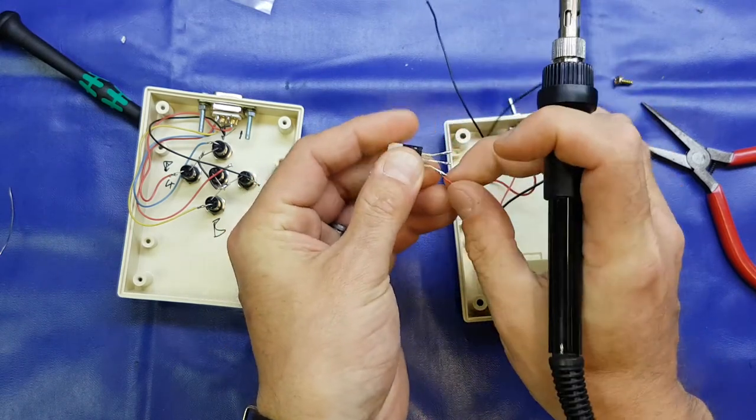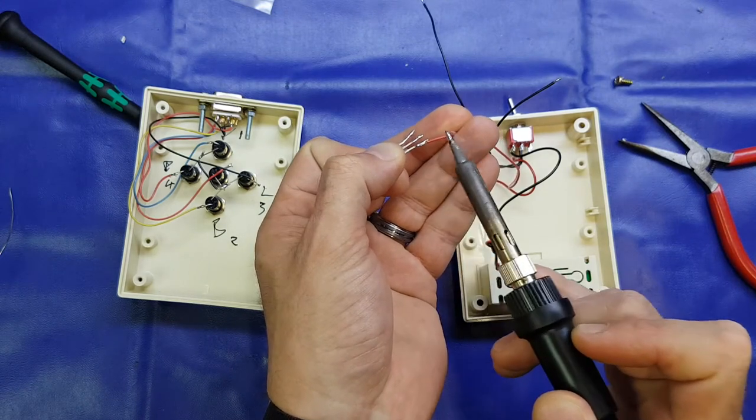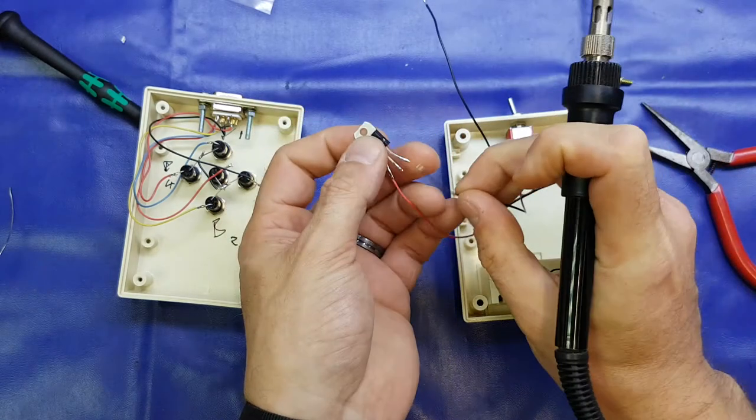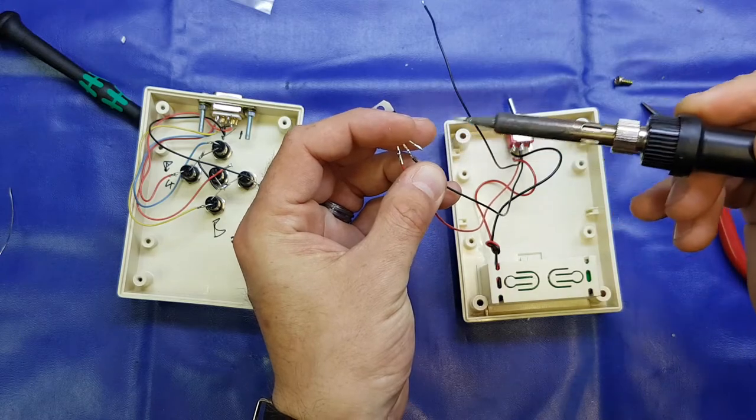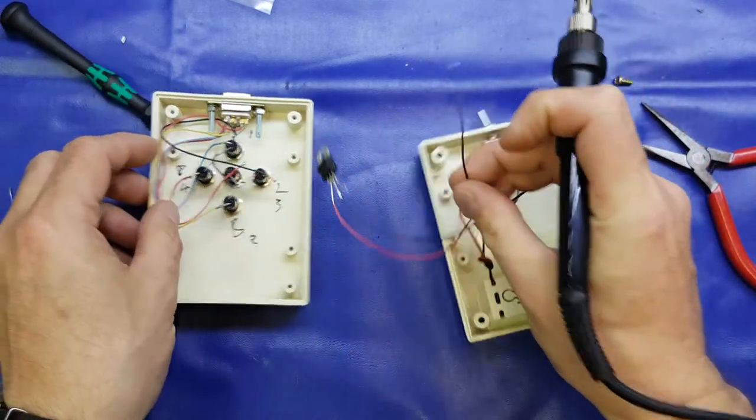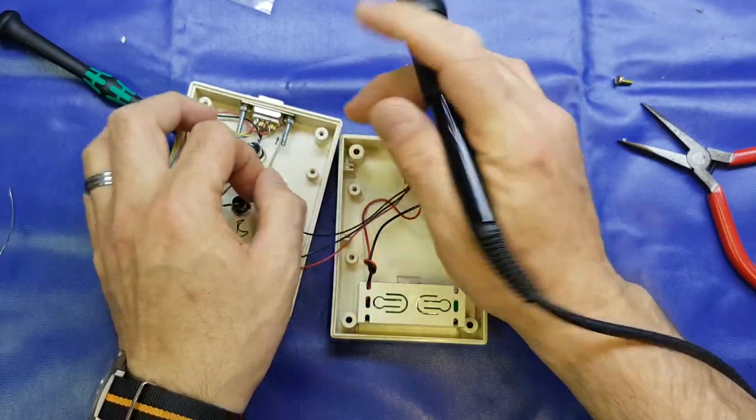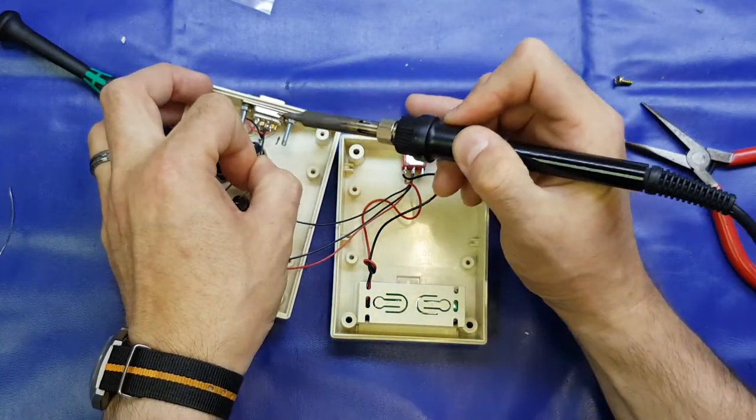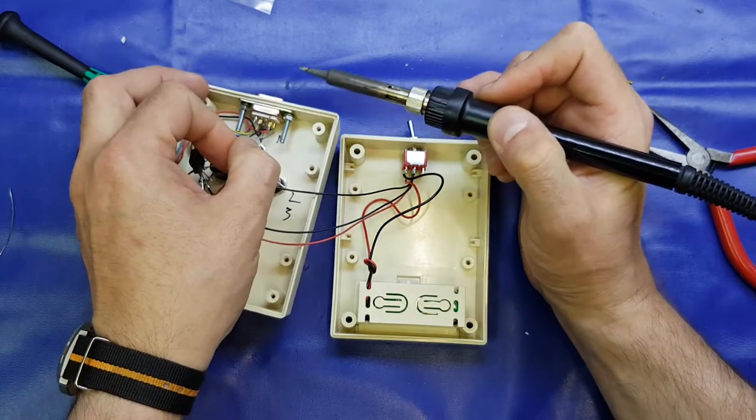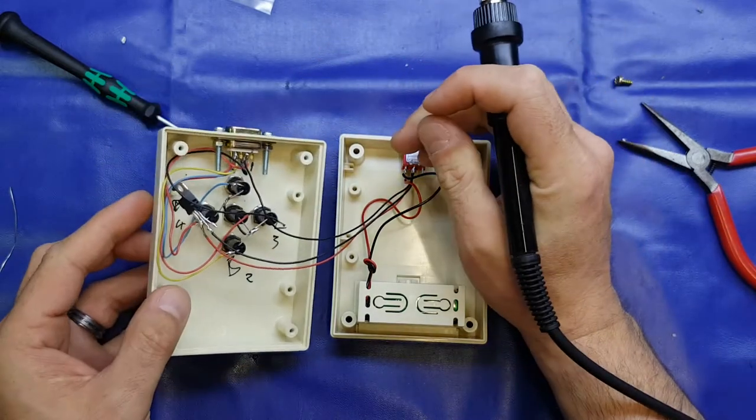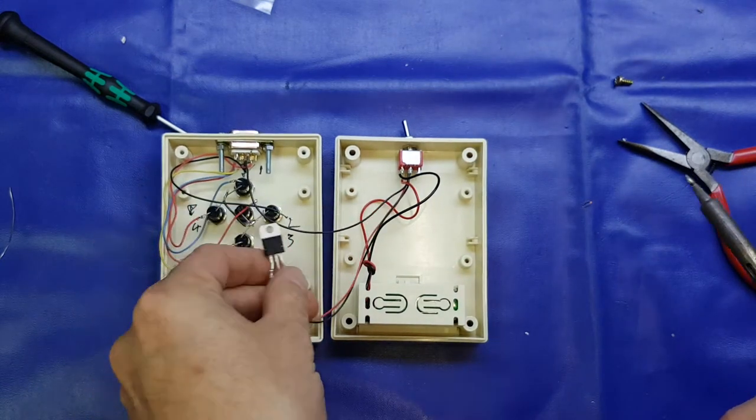I'll just bend these leads out slightly as well. Make it a bit easier. There we go. And we'll pop the negative side. And pin 8 on the connector here. Yeah, that looks okay. And that's pretty much it.